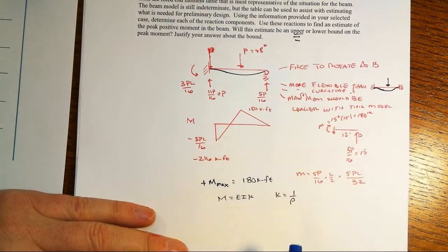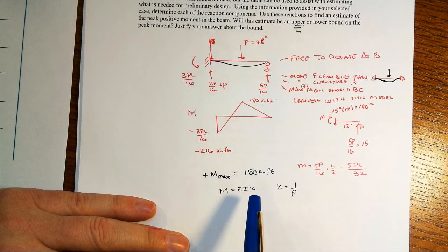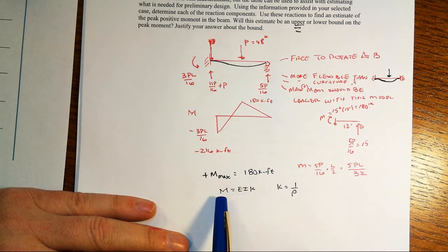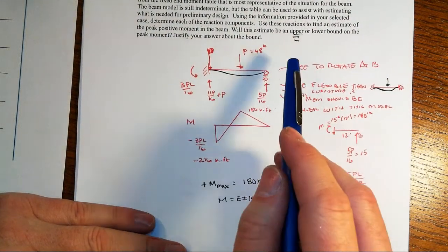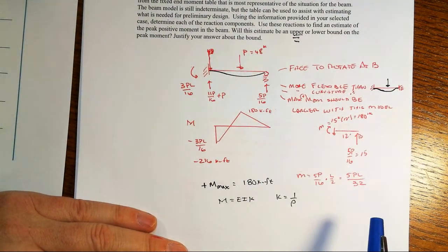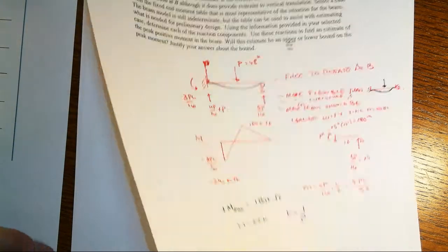then that means that we not only have probably larger maximum displacements, but we also have larger curvature. And with moment curvature relationship, M equal EI kappa, then if the curvature's larger, so is the moment. And so this seems to me that this is going to be an upper bound estimate, not a lower bound estimate, right, at least for that maximum positive moment.